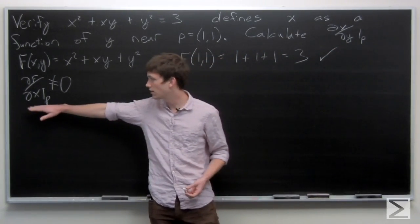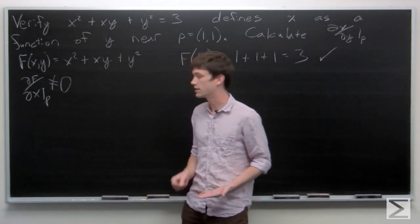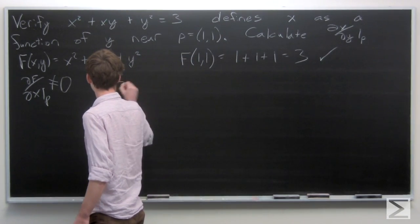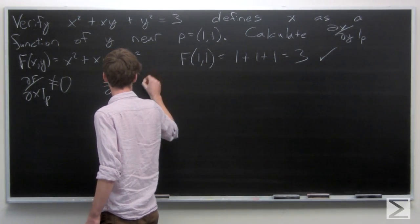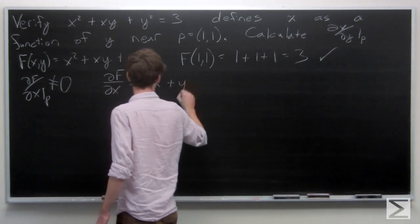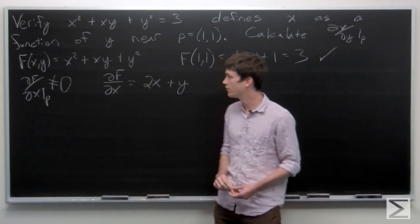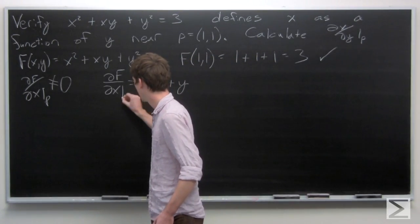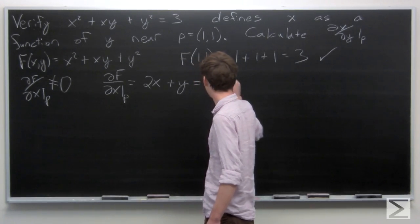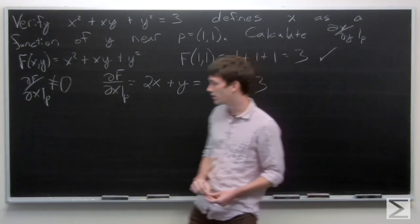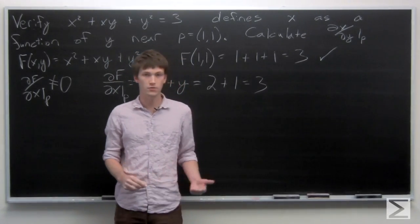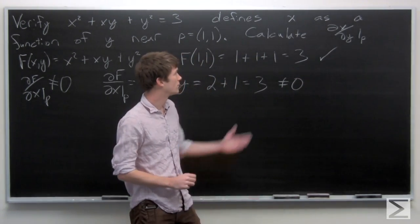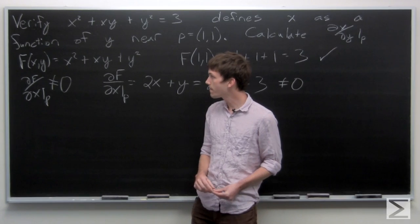Now we want to calculate our partial derivative of f with respect to x and then evaluate that at p. So our partial derivative of f with respect to x is equal to 2x plus y. And when we evaluate that at p, we get the value 3, which is obviously not zero. So that means that we can define x as a function of y near p.